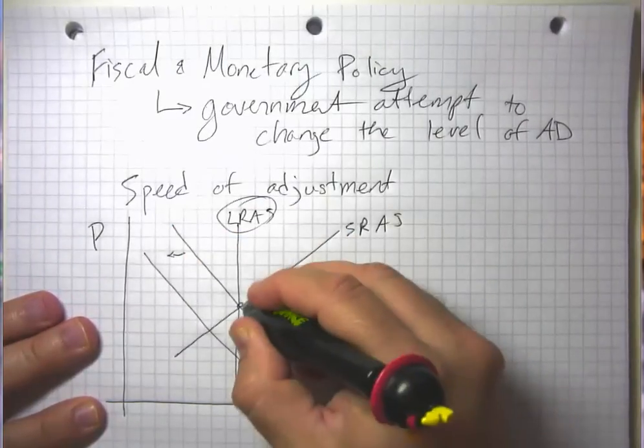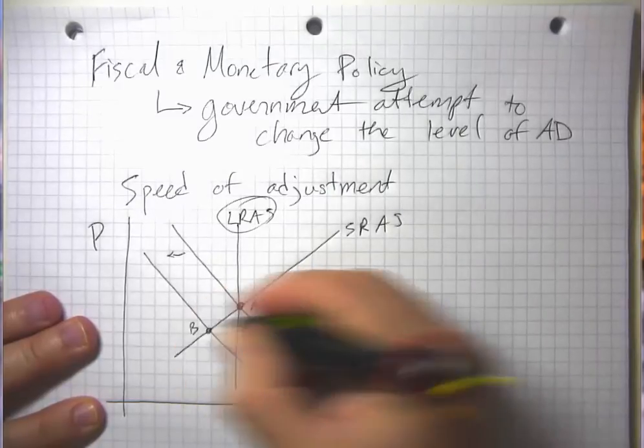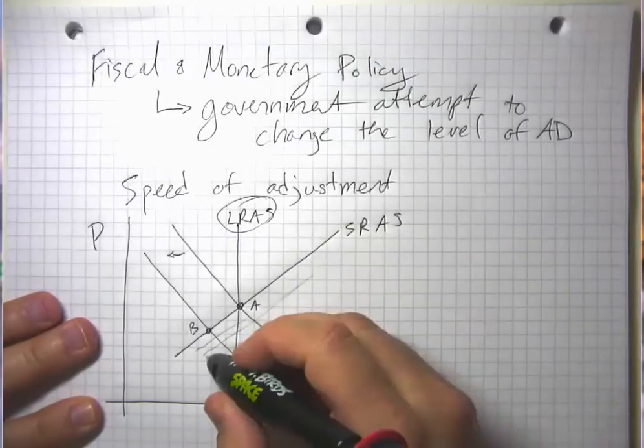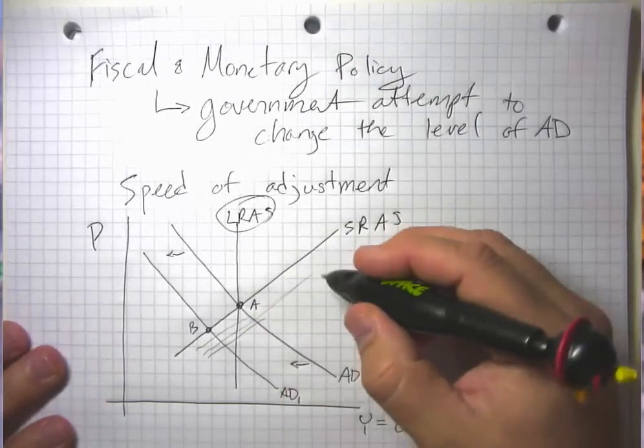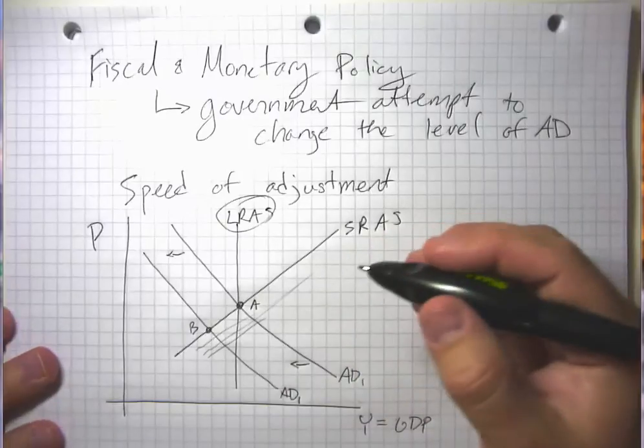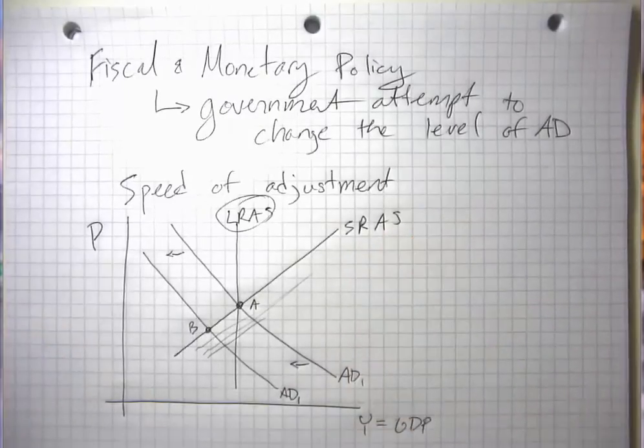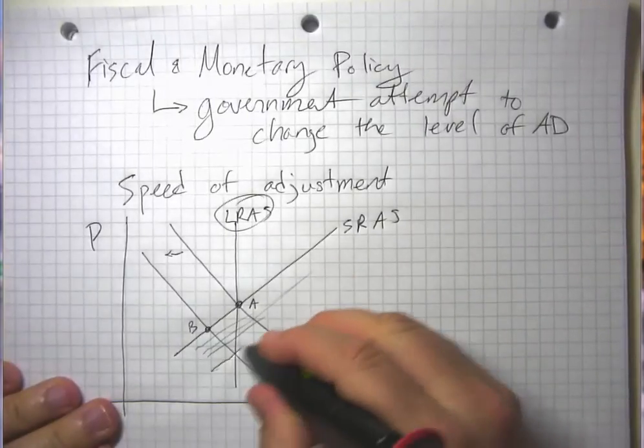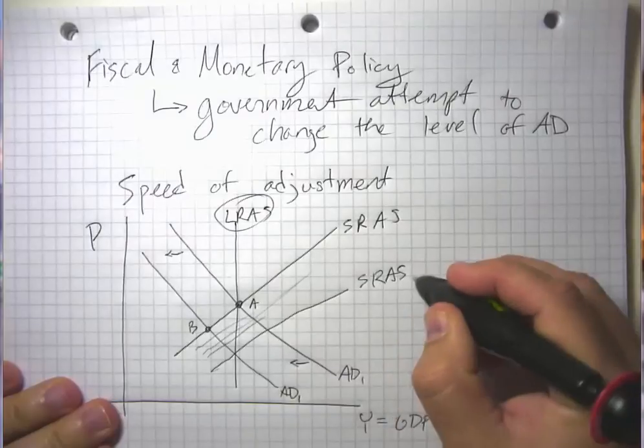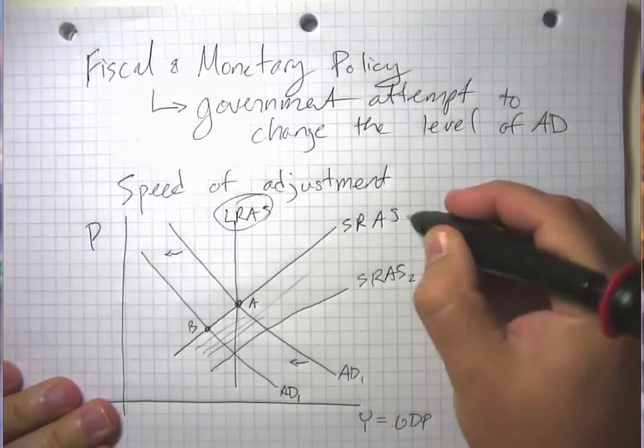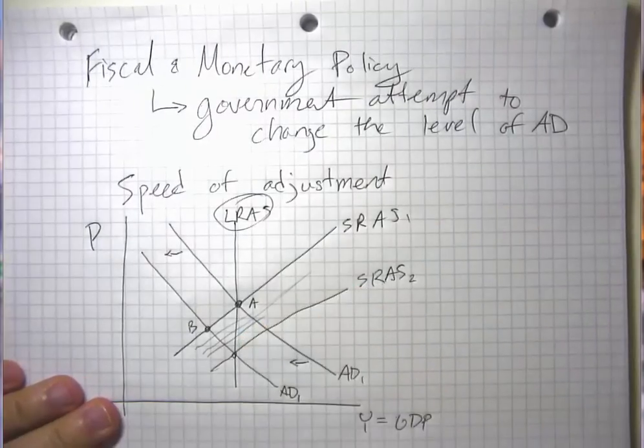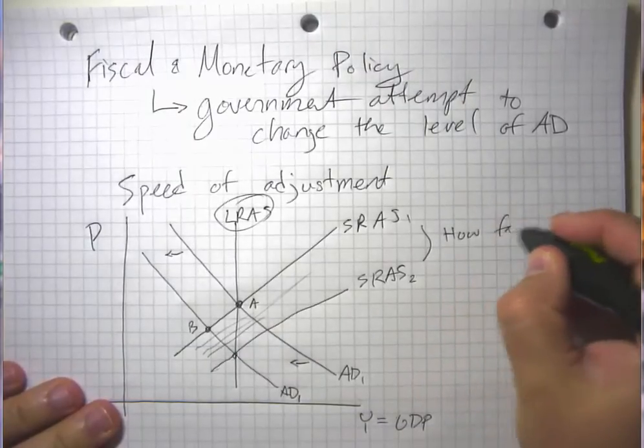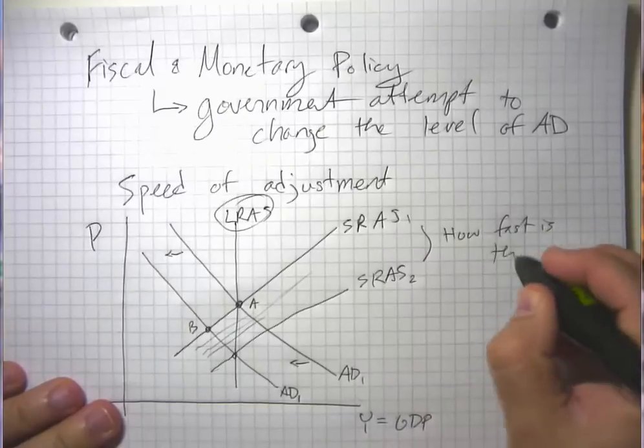That causes us to move from a point like A to a point like B. Then gradually, various internal processes in the economy to do with wage and price adjustment or how people change their expectations moves us to something like this short run aggregate supply and GDP recovers its former level. But how fast this is is an open question.